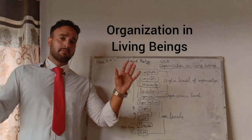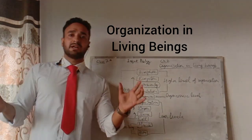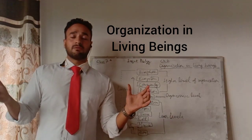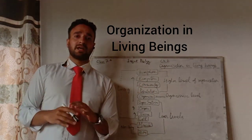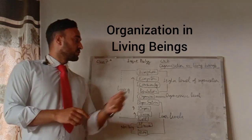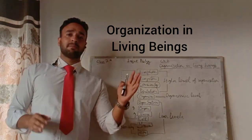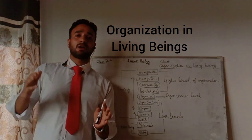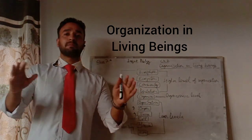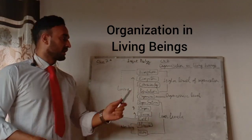When both biotic and abiotic communities are considered together, it makes up the ecosystem. So ecosystem is an association of the living and non-living communities in a particular area.